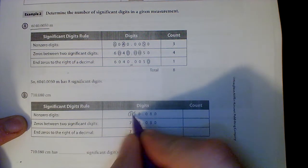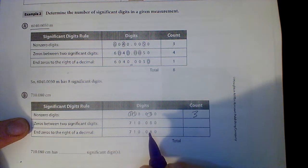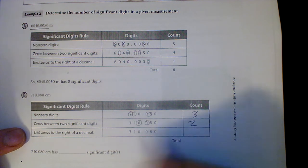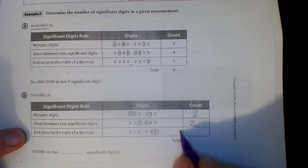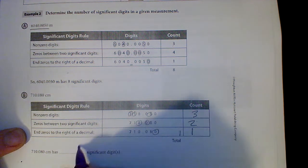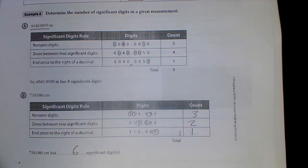Now we'll do the same thing with another number. I'm going to circle the non-zero digits: one, two, three - there are three non-zero digits. Zeros between them: there are zeros here and here. And zeros to the right of the decimal: there are two zeros to the right. So our significant digit count is five, six - we write that right there. All we're doing is: non-zeros, zeros between, and zeros to the right of the decimal.